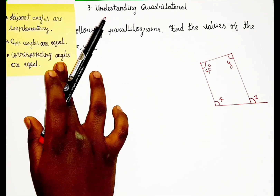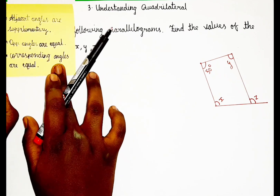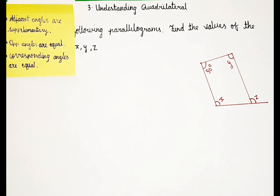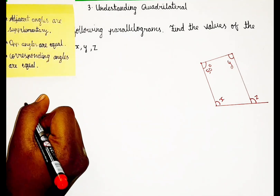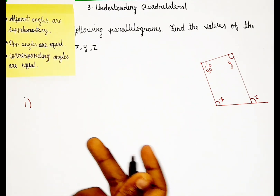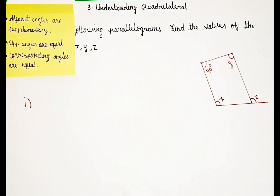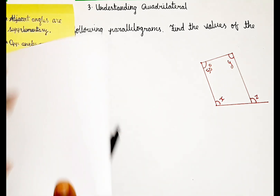In every question I will be showing the key points like this so that it won't confuse you. Now using this, we are going to be solving this question. Let me take x as the first subdivision. Is there any connection to x? We have one connection — x and 50 are adjacent angles.